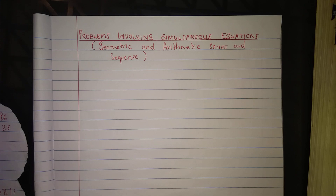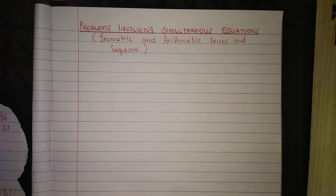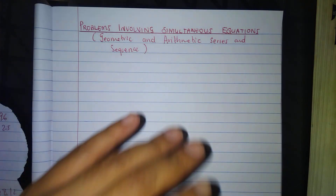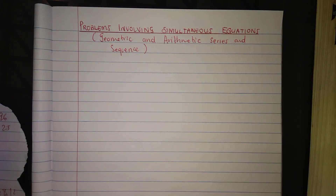In this discussion, problems involve simultaneous equations where we are given a geometric or arithmetic series or sequence, with values given at random positions in the sequence or series. We then calculate maybe the first term, a common difference or a common ratio, and sometimes find the first three terms when given terms like T26, T8, or T100. You need to set up equations simultaneously.